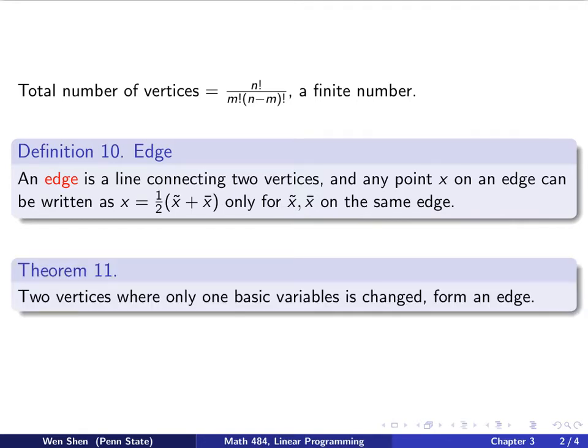So let's see the connection now. This is theorem 11, and the theorem says two vertices where only one basic variable is changed form an edge. So basically they are adjacent. If you have two vertices where you switch only one basic variable, that sentence sounds familiar because in simplex algorithm, every time we pivot, we switch one basic variable. So we're basically going along an edge.